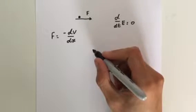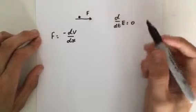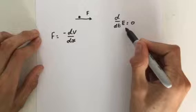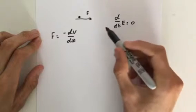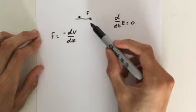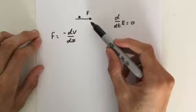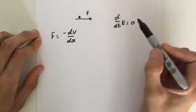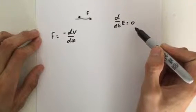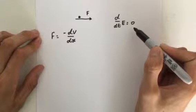In exercise 3, we are asked to prove that the rate of change of total energy of a single particle moving along the x-axis under the influence of a force is zero. In other words, prove the conservation of energy.